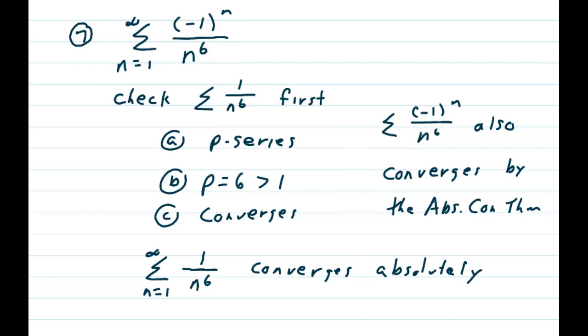And the reason I chose the positive series first is now we have an automatic. The alternating series, negative 1 to the nth over n to the 6th, also converges by the absolute convergence theorem. So we're finished. The summation of 1 over n to the 6th, or negative 1 to the nth over n to the 6th, converges absolutely.